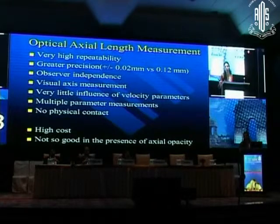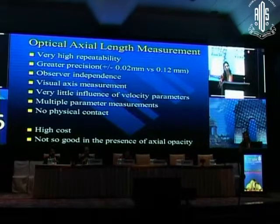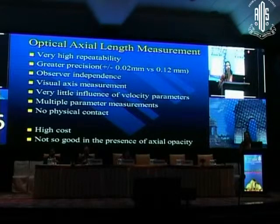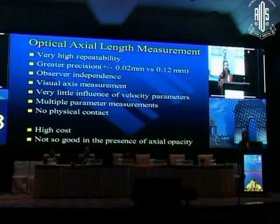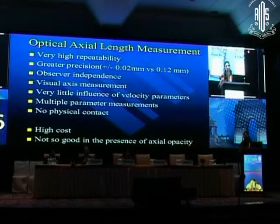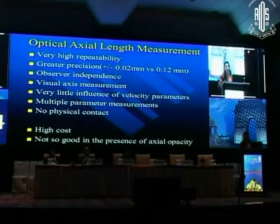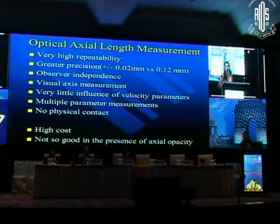Another advantage is you can measure not only the axial length but also additional parameters including anterior chamber depth, white-to-white, and corneal diameter measurements. The biggest advantage is there is no physical contact, so the patient is comfortable, no risk of contamination. Obviously it is a costlier instrument, and it is not good for axial opacities or very dense cataracts - such as dense posterior subcapsular cataract, vitreous opacities, corneal opacities, or even thick macula or macular edema.